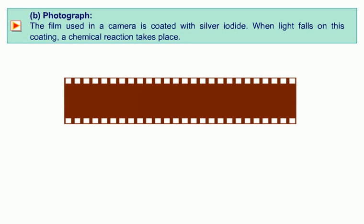Photograph. The film used in a camera is coated with silver iodide. When light falls on this coating, a chemical reaction takes place.